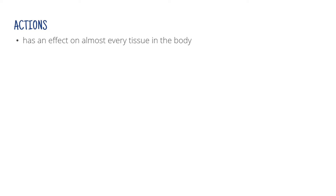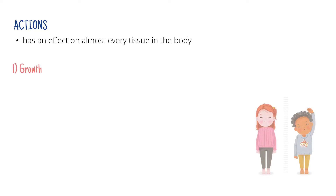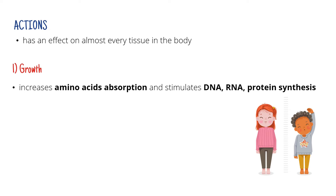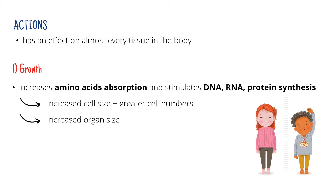The first thing we are going to look at is what the hormone actually does. Growth hormone is very special in that it has an effect on almost every tissue in the body. Its first effect is growth. Growth hormone increases the absorption of amino acids and it also stimulates the synthesis of RNA, DNA and proteins. As a result, we have a greater number of cells that are also bigger, which increases the size of organs and simply said, stimulates growth of almost every tissue.